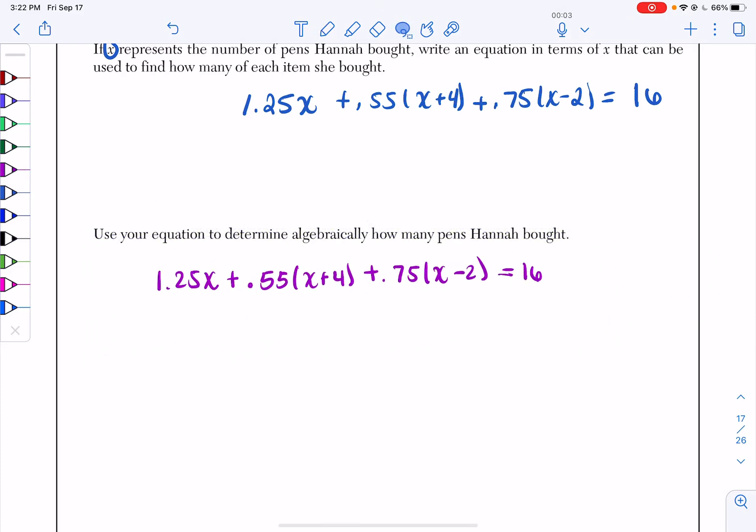Now, what we're going to do is solve this for X. So the first question we have to ask ourselves if we're doing PCVNA is do you have any parentheses? And if you look, I've got a bunch of parentheses. So I have to distribute my coefficients. I distribute 0.55 to my X and my 4 and 0.75 to my X and my 2.